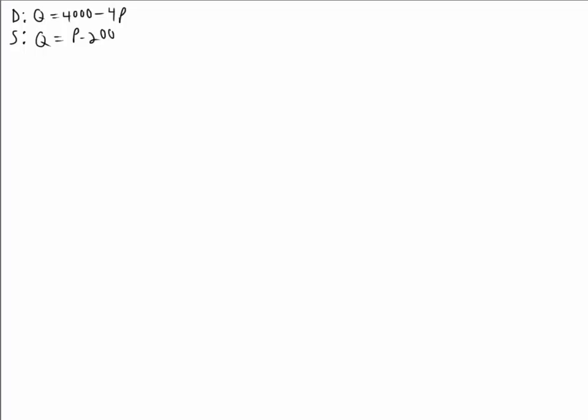Let's take a look at Lesson 12, Practice Problem 1. We are told the demand equation is Q equals 4000 minus 4P, and the supply equation is Q equals P minus 200.